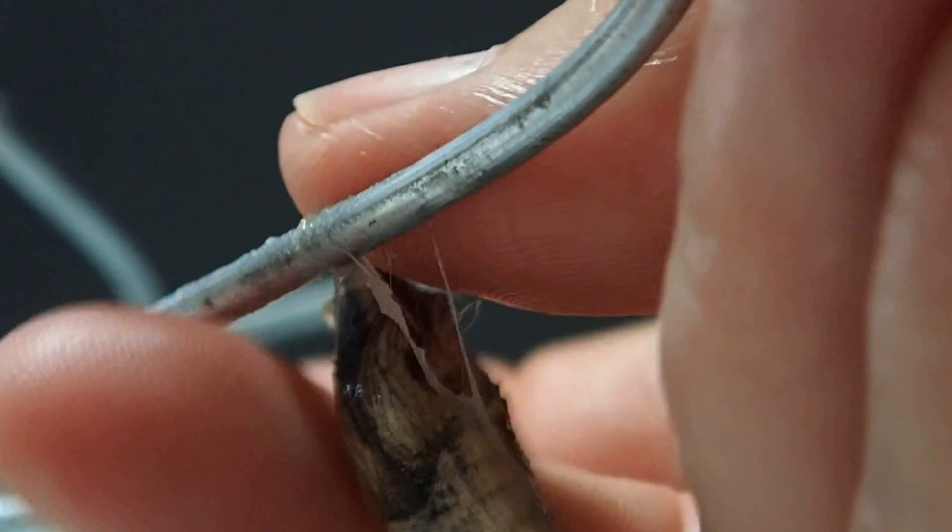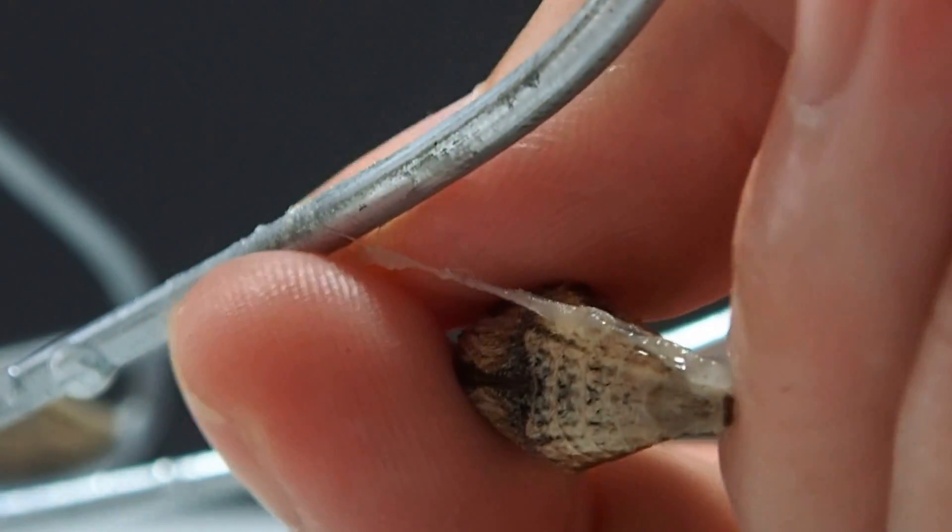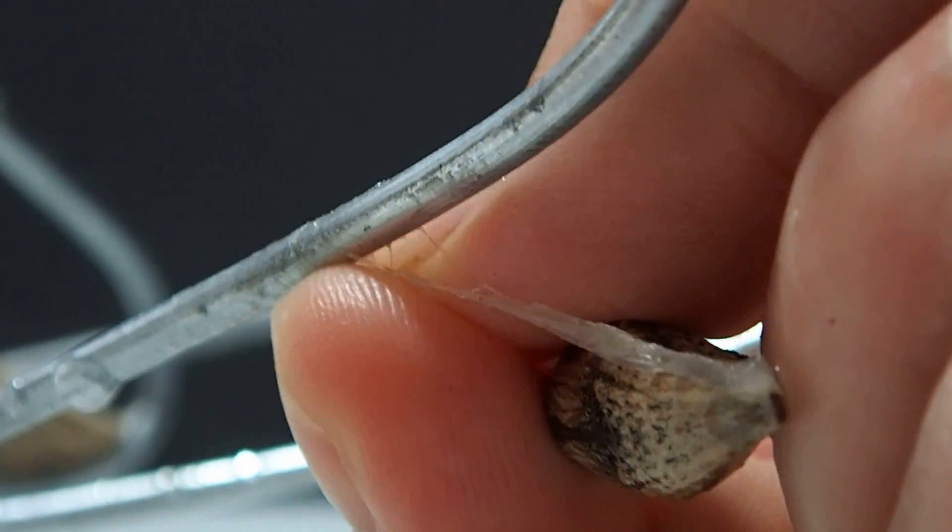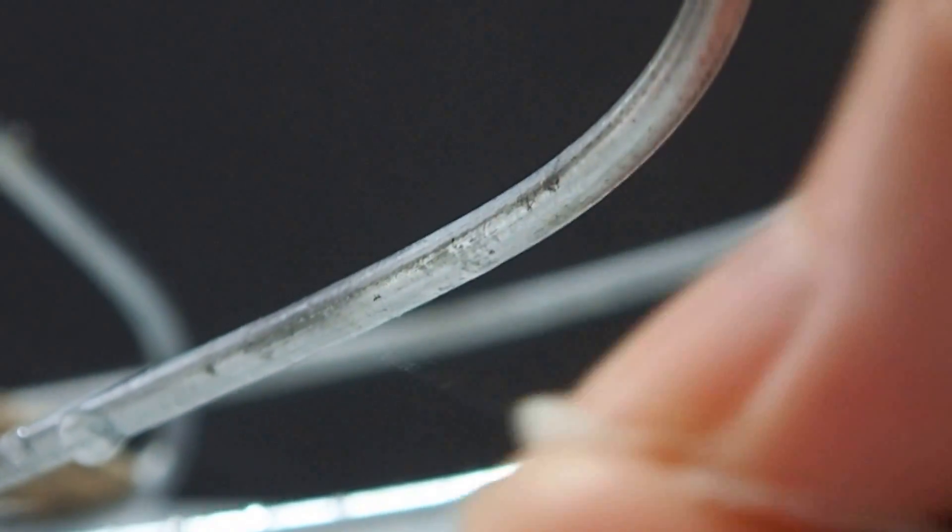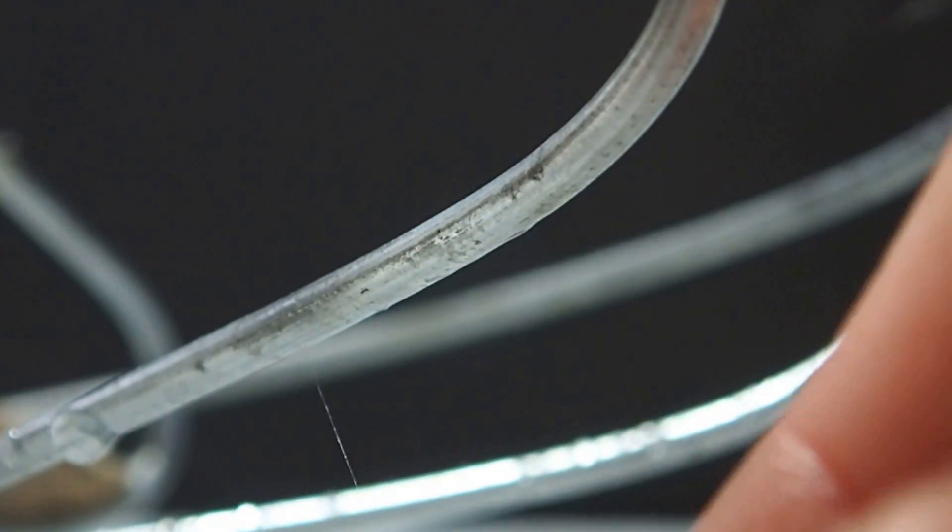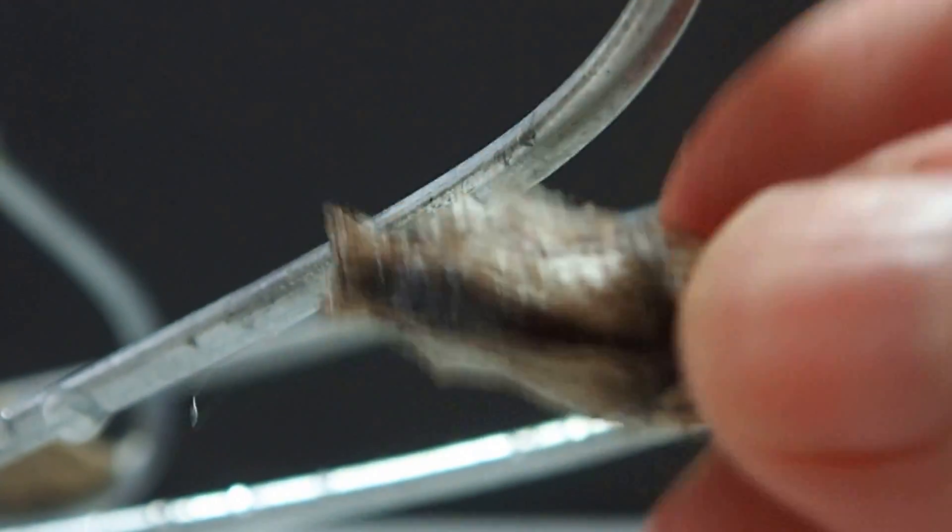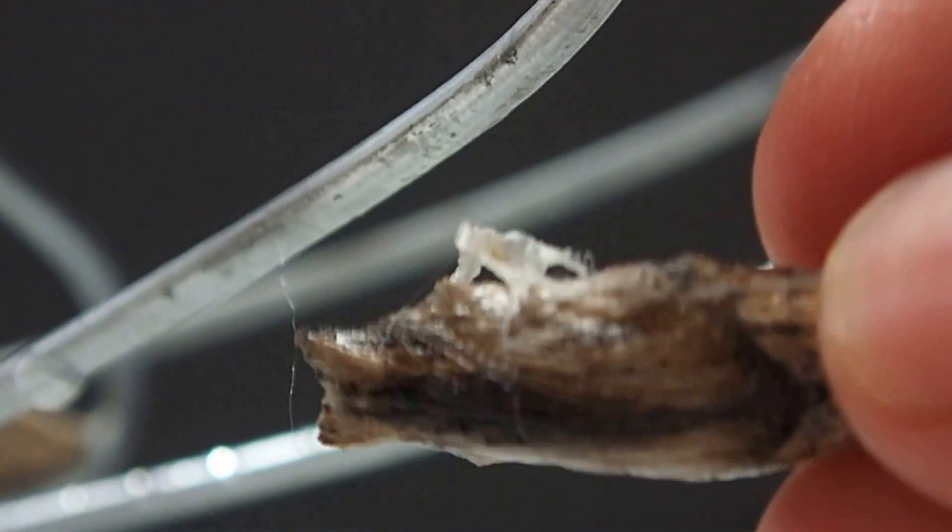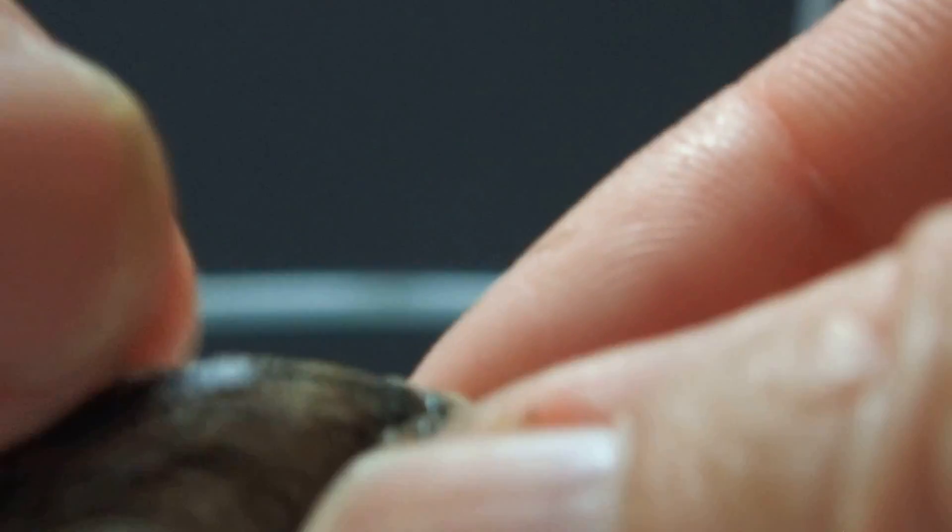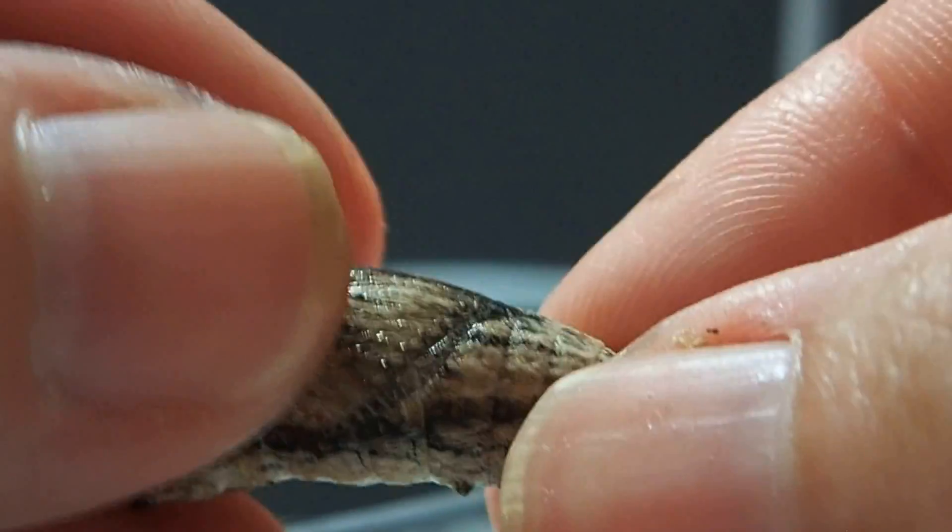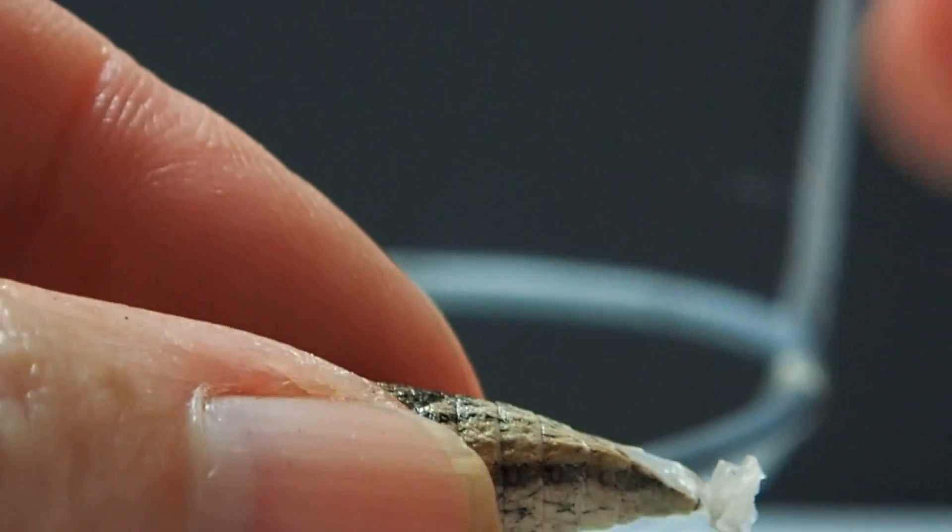And once you get it loose, you can carefully go in with your hands and you can pull it off. So you see, this is all pulled off. And then what you want to do is you've got the silk parts.